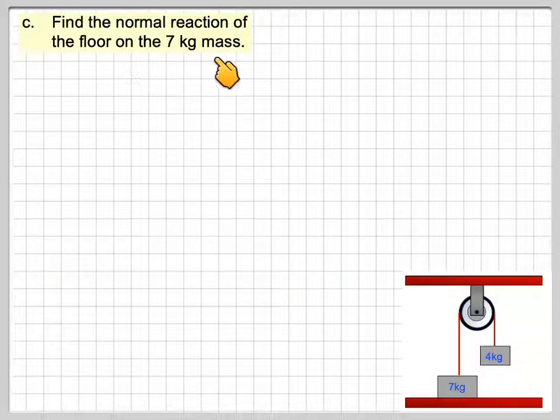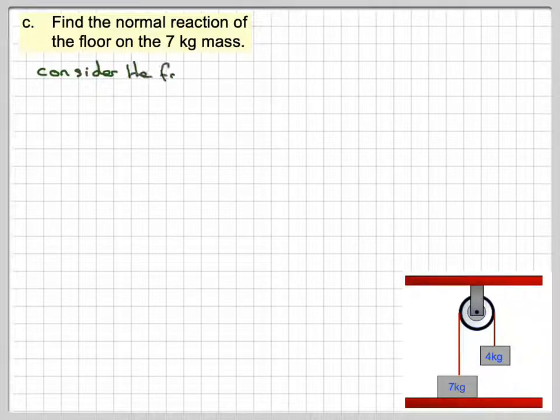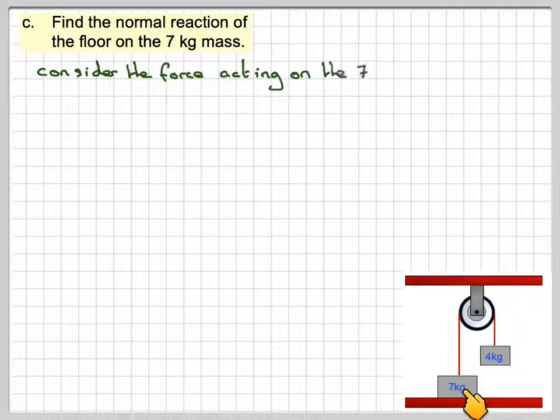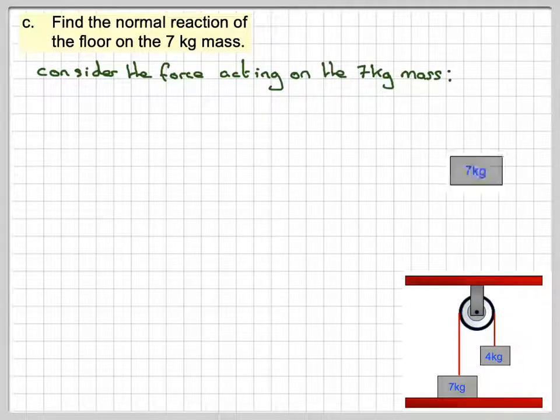And then it says, find the normal reaction of the floor on the 7kg mass. So if we now consider the forces acting on the 7kg mass, drawing out the diagrams separately. And it's always good you need to draw these diagrams out separately.